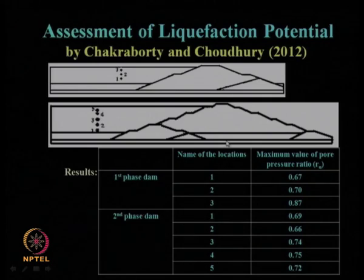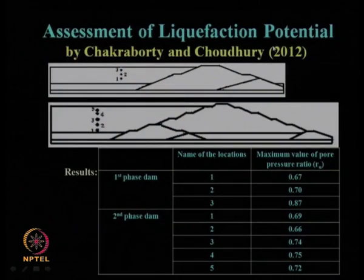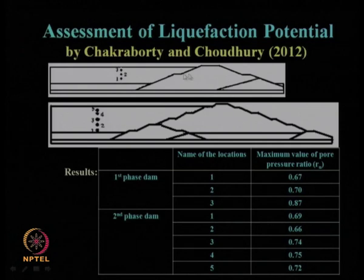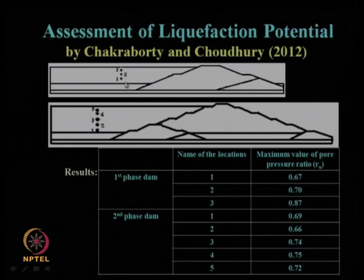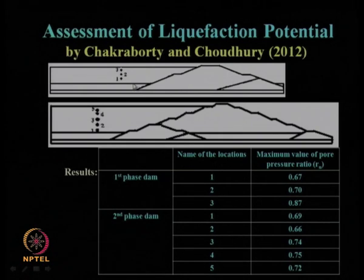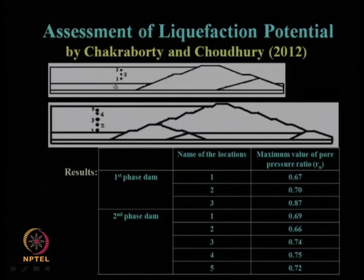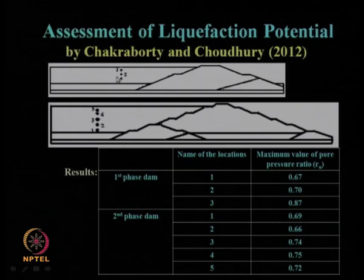In the previous lecture, we also learned about an important criterion for tailing dam design: the liquefaction behavior — how the tailing dam behaves during possible soil liquefaction during an earthquake. The assessment of liquefaction potential was discussed as given by Chakravarty and Choudhury 2012. For the first and second phases of the dam, various points in the tailing portion were analyzed. The tailing portion is mostly in the unconsolidated or loose state because waste material is dumped in water, creating high chances of liquefaction.